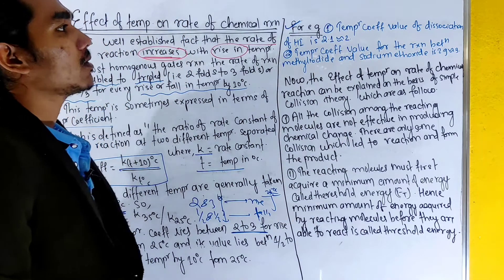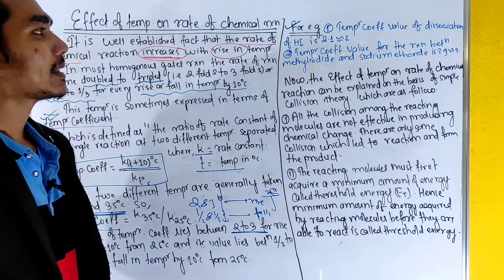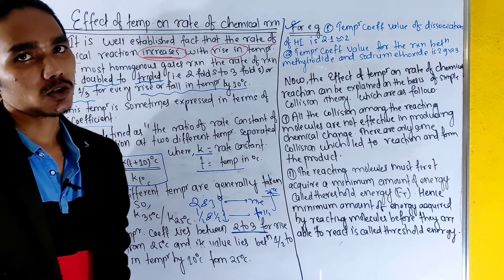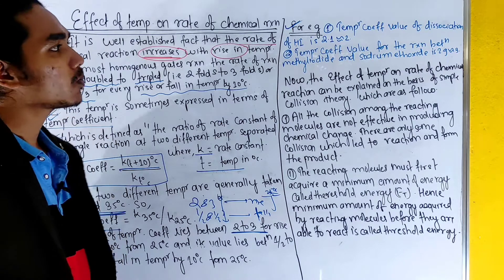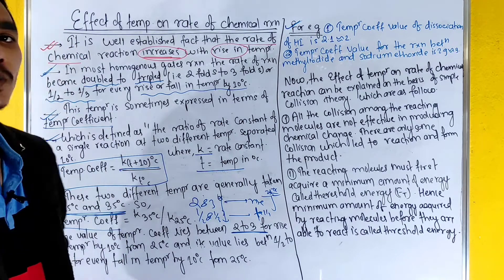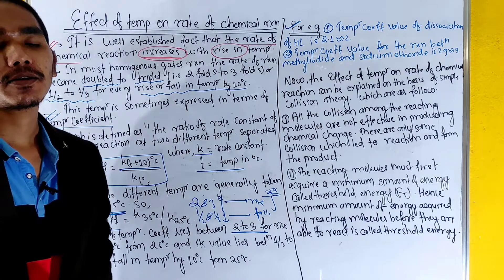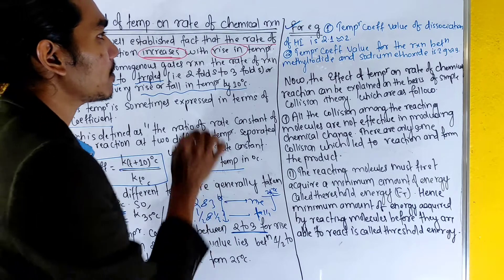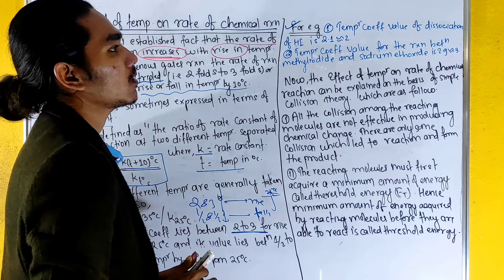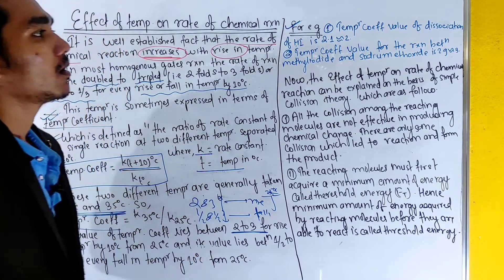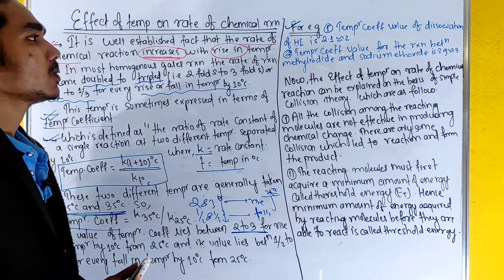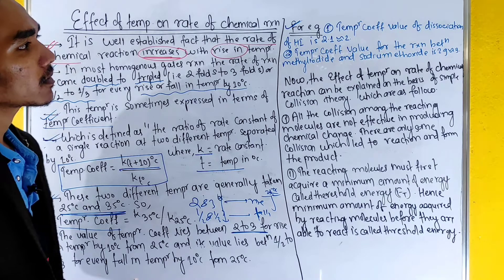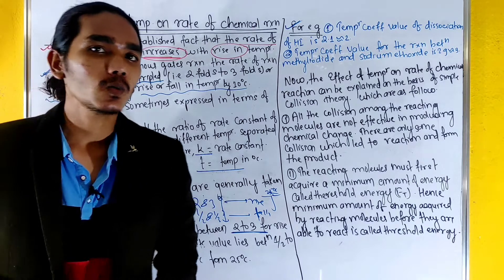Temperature coefficient value of dissociation constant of HI is nearly equal to 2. The temperature coefficient value for the reaction between methyl iodide and sodium ethoxide is 2.9, approximately equal to 3.